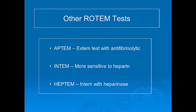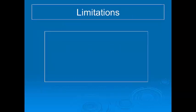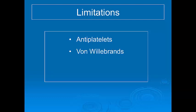The other common ROTEM tests include the APTEM, which is an EXTEM test with an anti-fibrinolytic agent added. INTEM and HEPTEM are used when the patient has received heparin, and these use ellagic acid as an activator instead of tissue factor. It is important to acknowledge that ROTEM is not able to assess some aspects of hemostasis, such as platelet function, the effects of anti-platelet drugs, or von Willebrand's disease. Some ROTEM parameters can be affected by anticoagulants like warfarin and the NOACs, but at present there is no clear role for the use of ROTEM in the management of these agents.